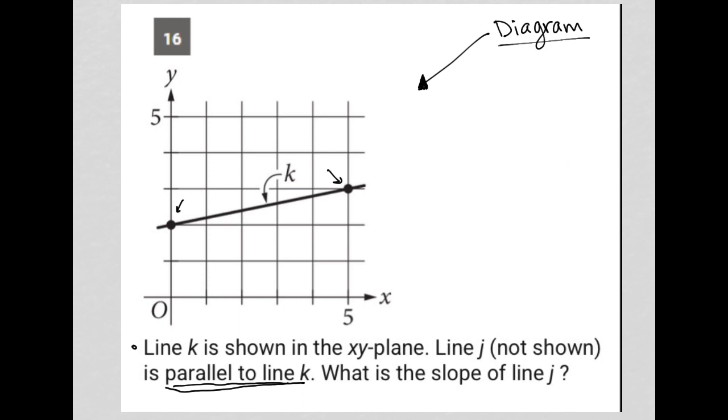So the slope of line J is actually equal to the slope of line K. In terms of slope, line J equals K. All I really need to do is figure out what's the slope of K.